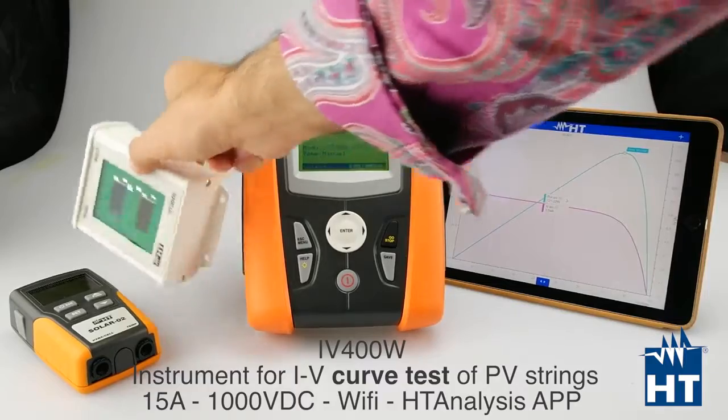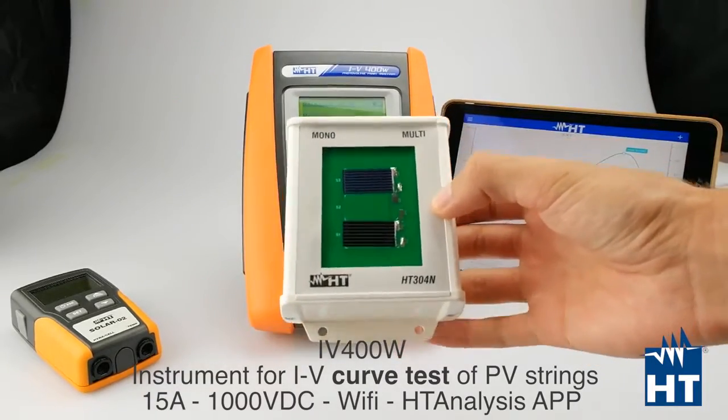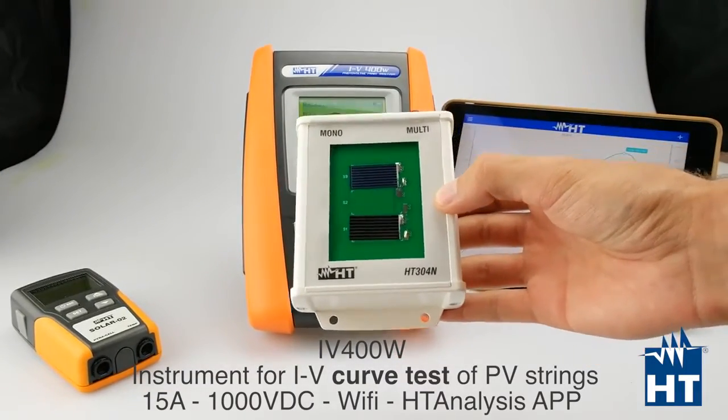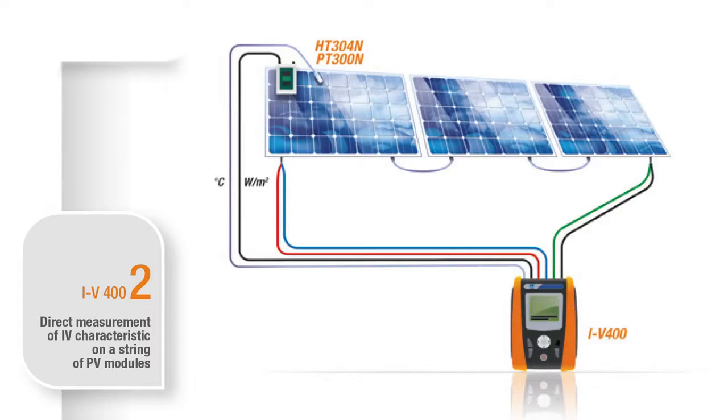You can find as a standard accessory this reference cell that you can use to measure irradiance and is able to measure mono panels or multi panels.